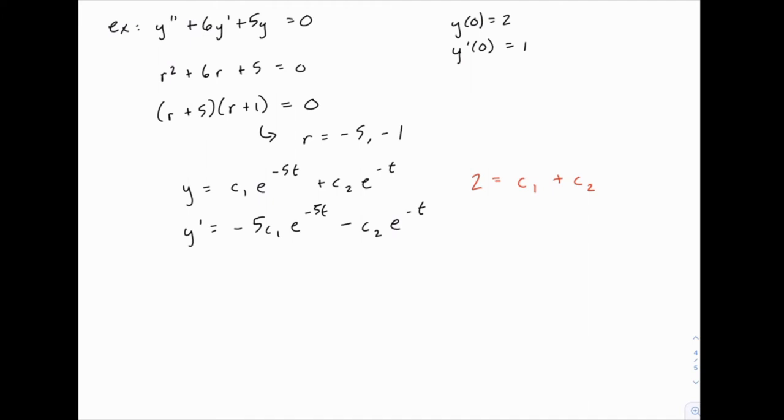Then with the first derivative, if we plug in t equals 0, y prime equals 1. So we have 1 equals negative 5c1, and again e to the negative 5 times 0 is just 1, minus c2, and again e to the negative 1 times 0 equals 1 as well. So we have this system of 2 equations for c1 and c2.